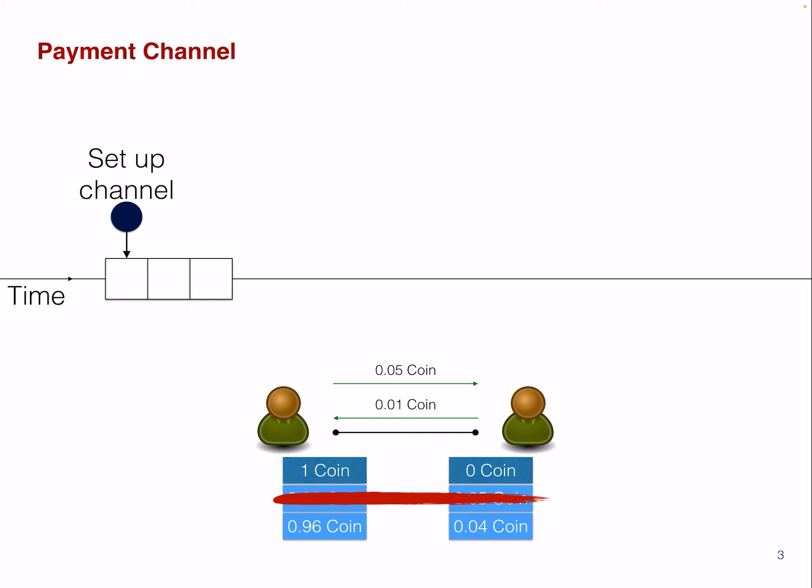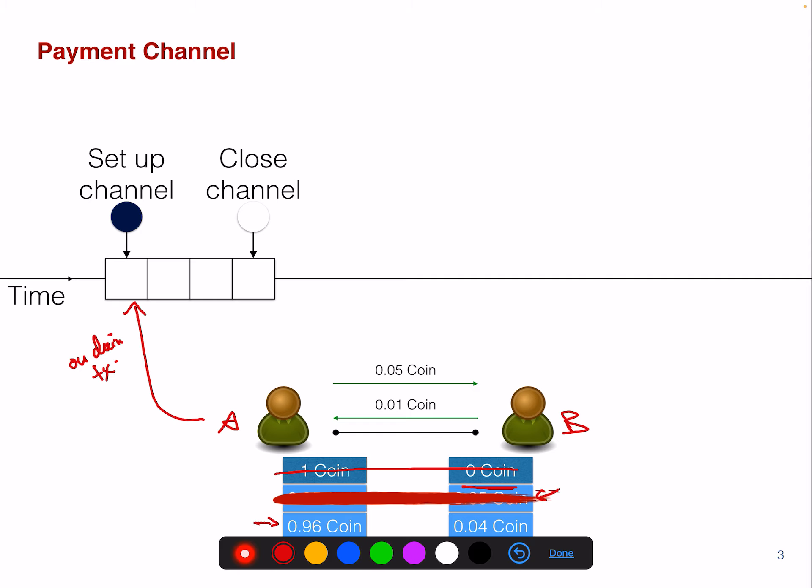Then the blockchain continues on mining blocks, and at some point in time, one of these peers will close the channel. And when it's closed, this on-chain balance here will be written to the blockchain. And then the actual exchange of the coins is performed and not before.